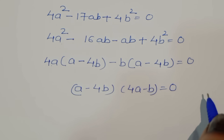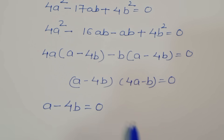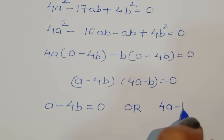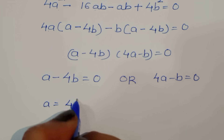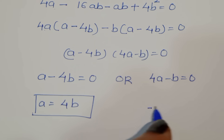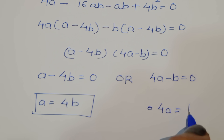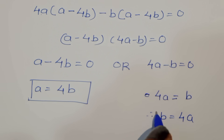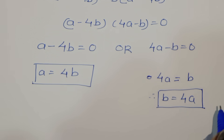So either a - 4b = 0 giving a = 4b, or 4a - b = 0 giving b = 4a. Therefore we have two cases: a = 4b and b = 4a.